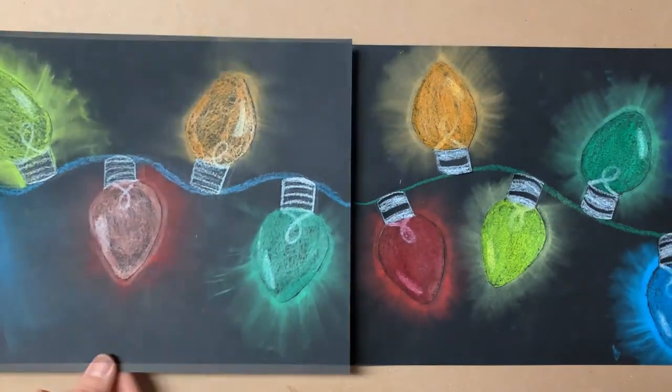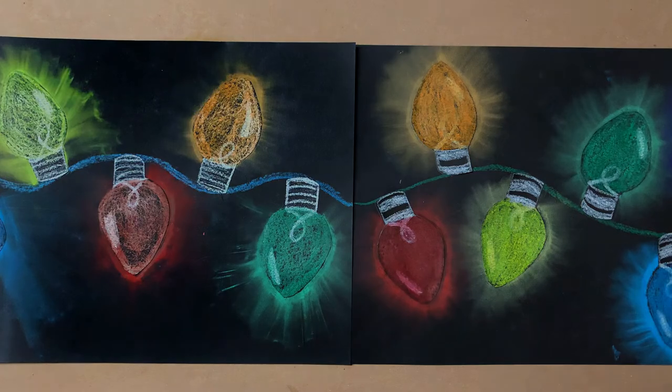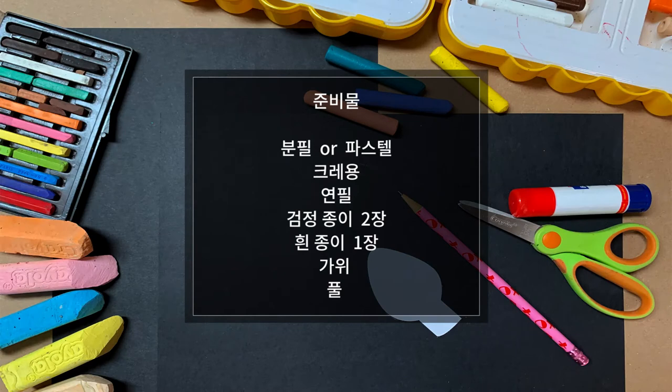Today we are going to use the smudging effect with chalk to brighten up the drawing of Christmas lights. I will tell you what you need.